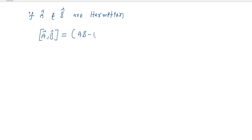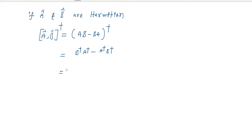Similarly, here I am going to apply the dagger of these two commutator operators. If you apply the dagger here, what will happen? So this is the commutator [A, B], and applying the dagger gives B dagger minus A dagger — so that is B dagger minus A dagger. We know that A dagger equals A and B dagger equals B — this is the Hermitian definition.